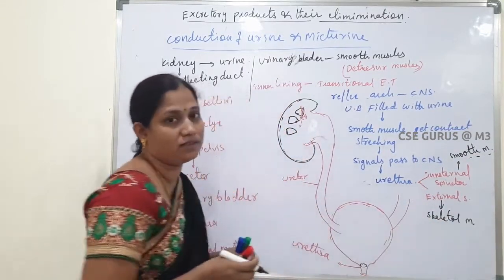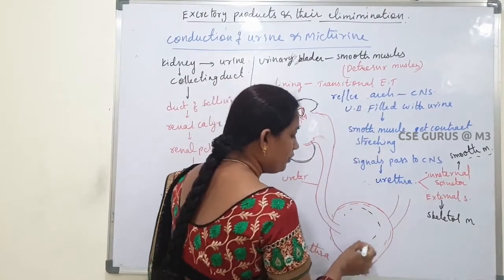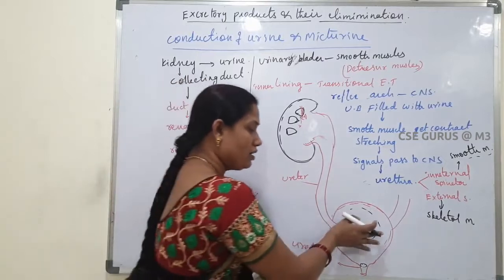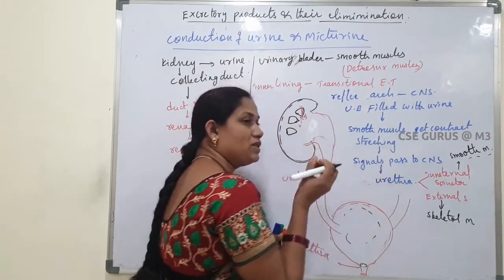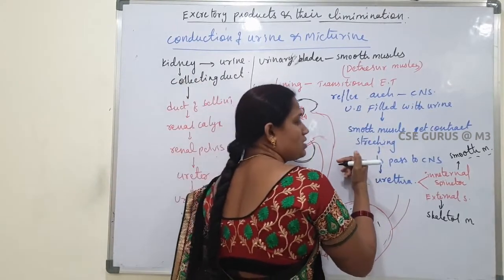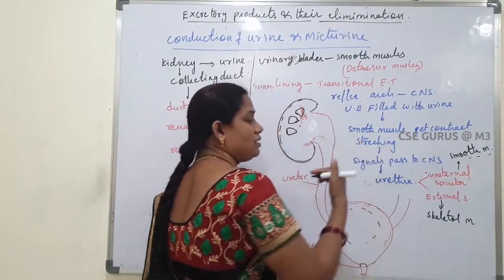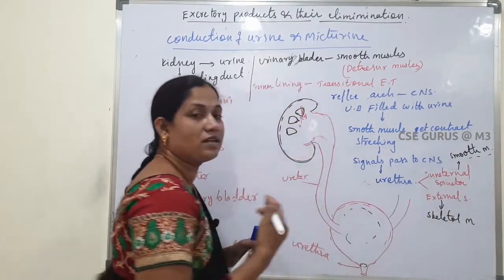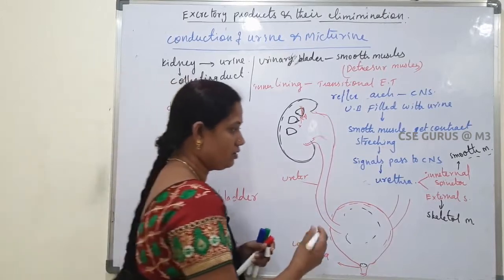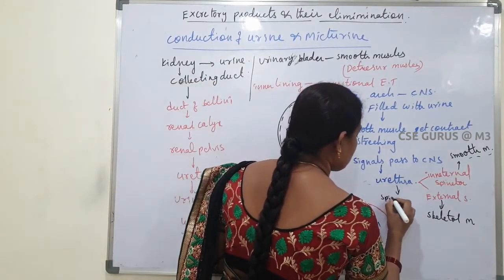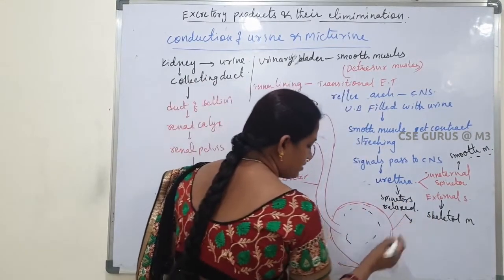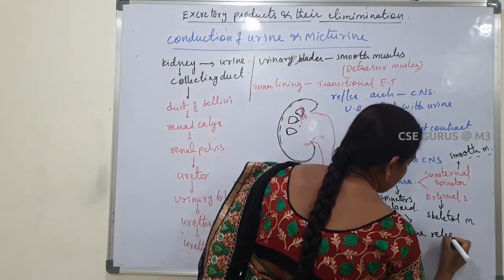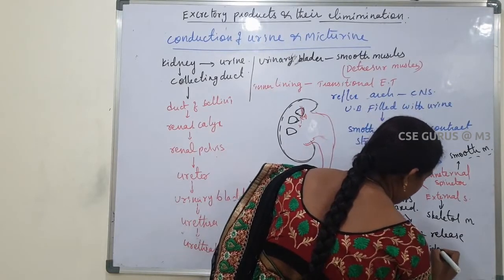When the urinary bladder fills with urine, it can store a maximum of half to one liter of urine. The smooth muscles contract, signals pass to the CNS, and that information is analyzed. Again, those signals reach the urethra, and the internal and external sphincters get relaxed. As a result, the opening can open and urine is released to the outside.